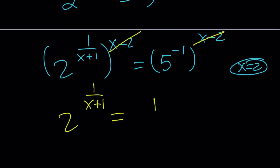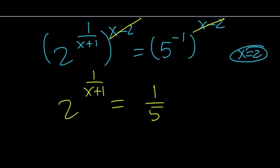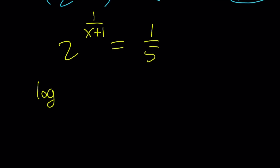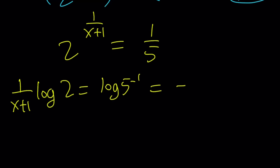This gives us 2 to the power 1/(x+1) equals 1 over 5. I want to log both sides: 1/(x+1) times log 2 equals log of 5 to the power negative 1, which is negative log 5.